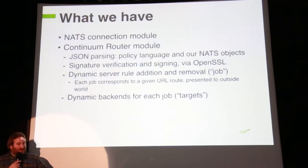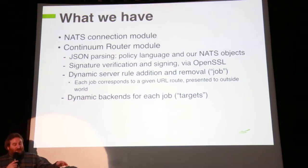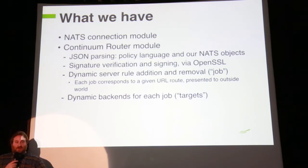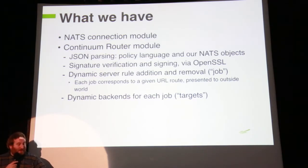So we have the two different modules: one just for handling the connections, one for managing publication of routes and the like. We've got JSON parsing, signature verification. The key point is that there are two concepts: you've got the job, which corresponds to an externally visible host name, and then dynamic backends for each job, which appear and disappear and are dynamically added and removed from the Nginx configuration. So as hosts go down, are restarted, or the customer scales up to 10 or 1,000 instances, or some are killed, Nginx dynamically adapts and knows where the backend is at any given time.